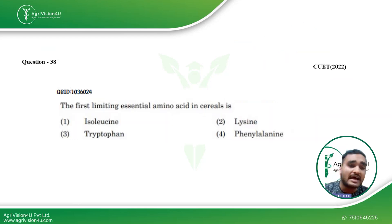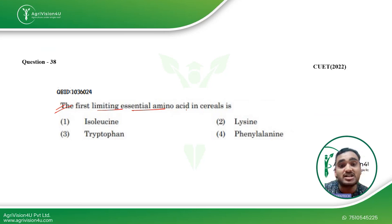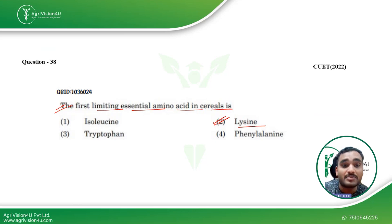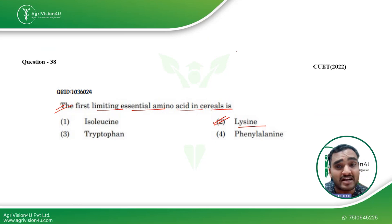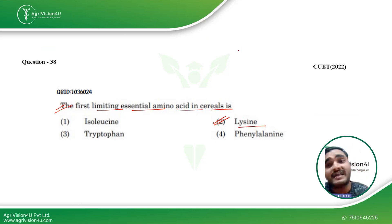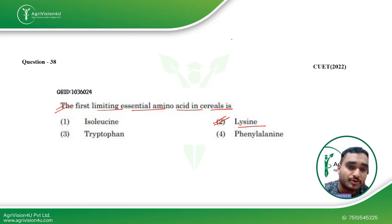Coming to the next question: the first limiting essential amino acid in cereals is lysine. Pulses are rich in lysine, but cereals are lacking in lysine. That is why it is always advised to couple your cereals with pulses — that will give you a complete amino acid profile. This question was also asked in CUET 2022.